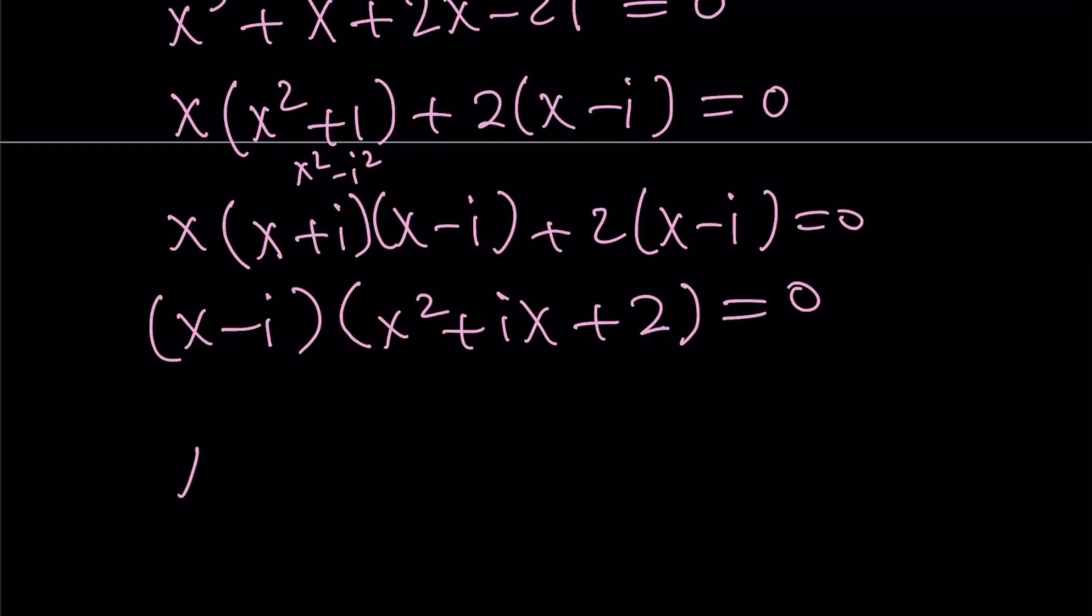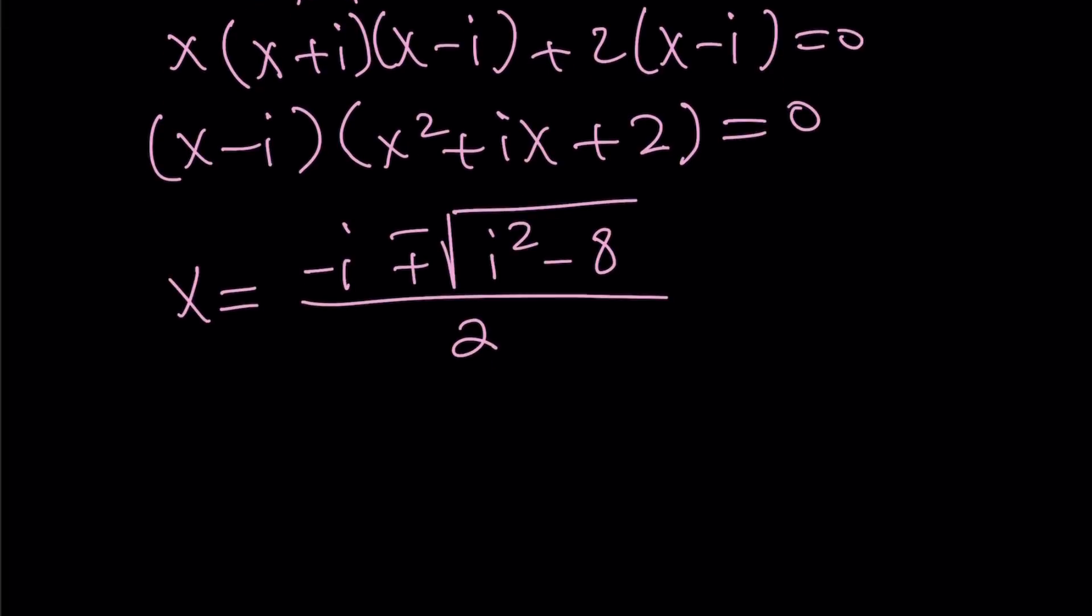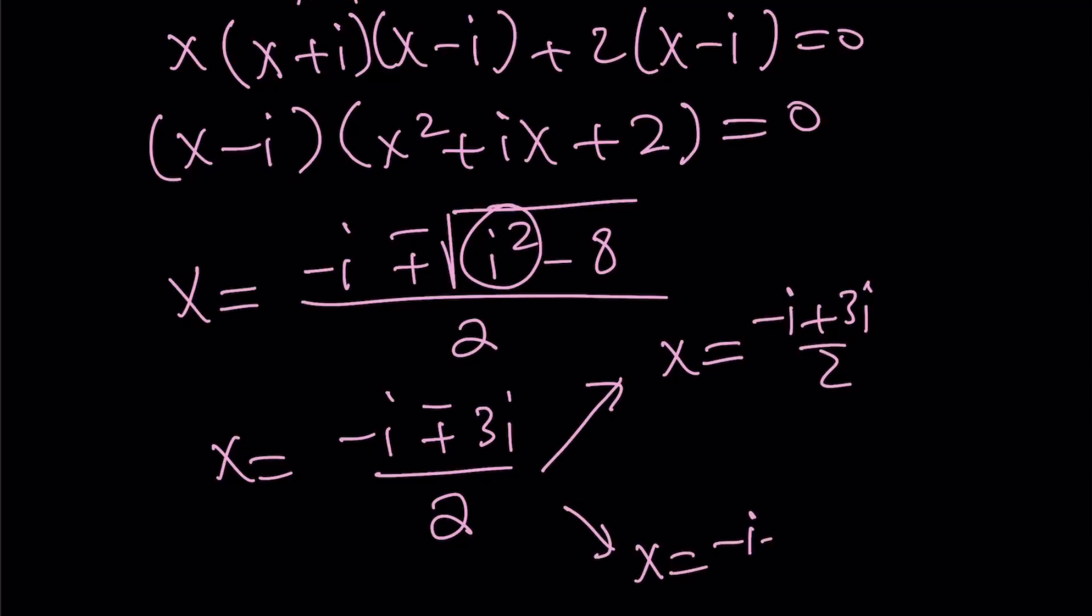So the rest is basically solving this quadratic equation. We know that x equals i is one of the solutions. Let's go ahead and find the other ones using the quadratic formula. So x equals negative b plus minus the square root of b squared, which is i squared, minus 4ac, that would be 8. i squared is negative 1. Negative 1 minus 8 is negative 9, and the square root of negative 9 is just 3i. From here, we get either negative i plus 3i over 2, or negative i minus 3i over 2. And this one gives us i, and this one gives us negative 2i.